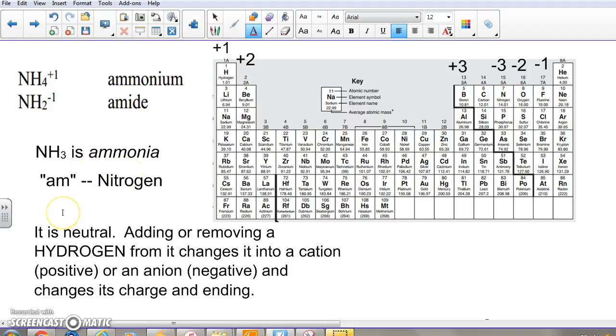Associate the prefix 'am' with nitrogen. And ammonia is neutral, NH3 is neutral. But if you add a hydrogen to it or remove a hydrogen from it, it will change into a positive or negative ion, and therefore its charge will change and its ending will change.